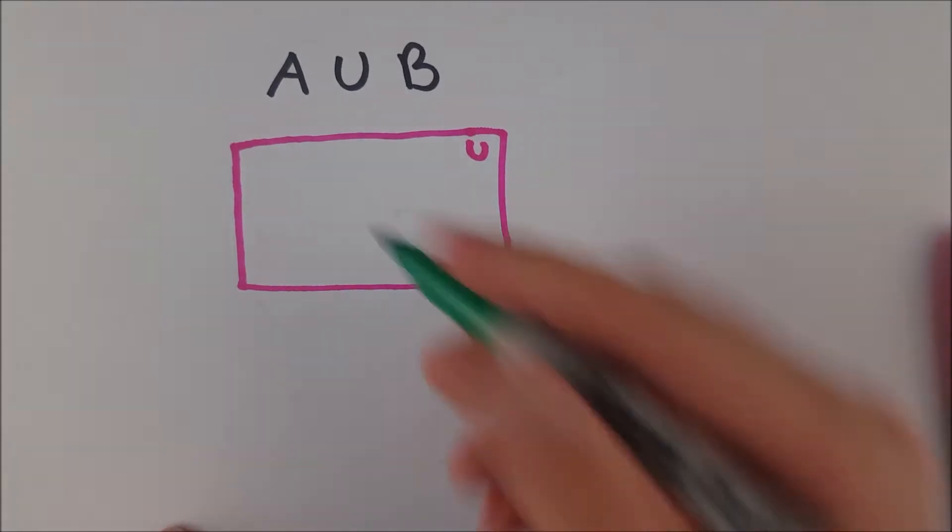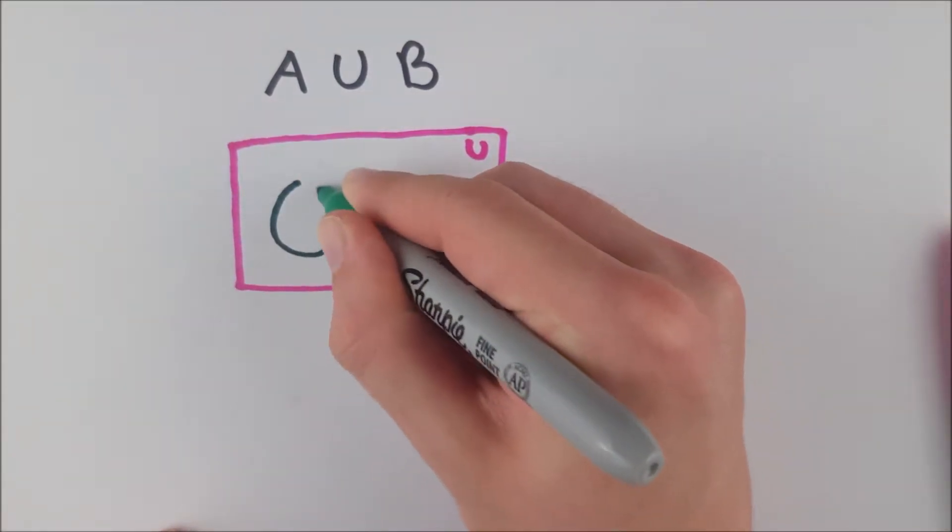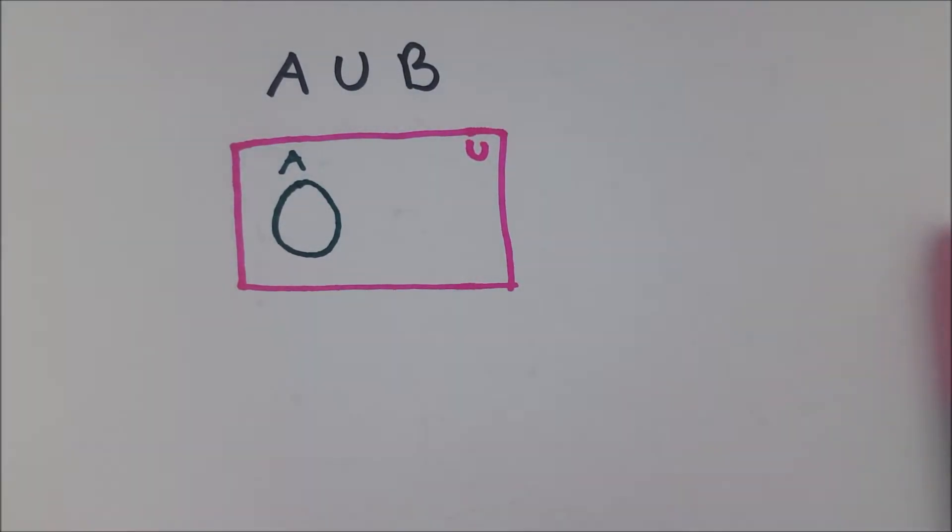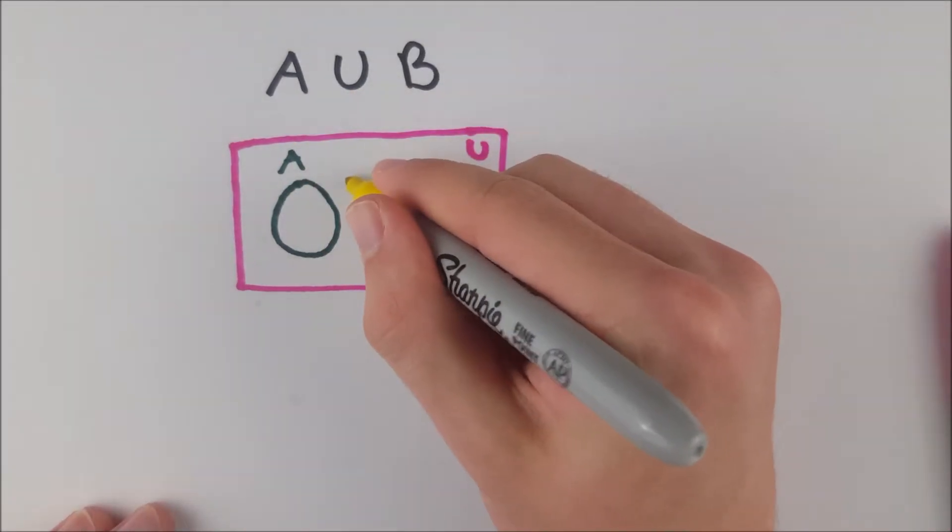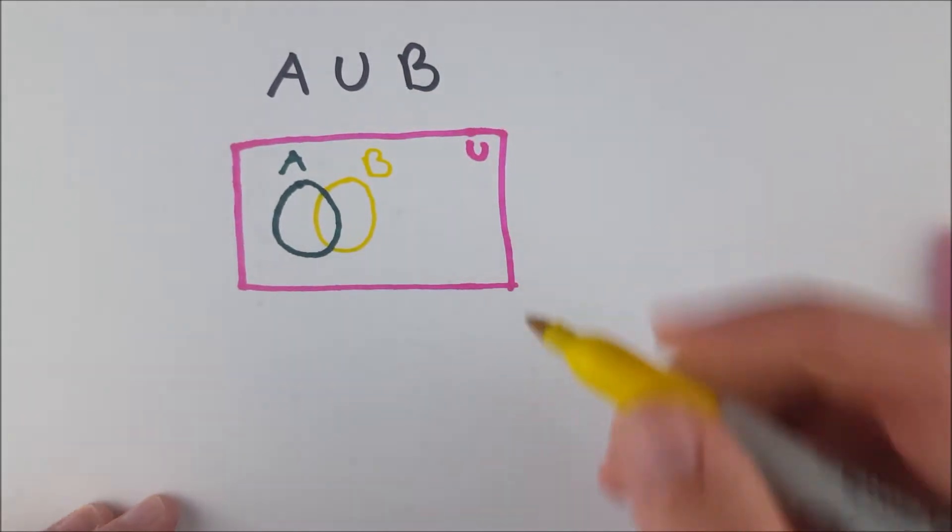And then let's say we have set A, which is this circle here, this green circle. I'll put an A over that. And then we have B, this yellow circle. And again, it's a little tiny, but I think you can see it pretty clearly. So that's B.